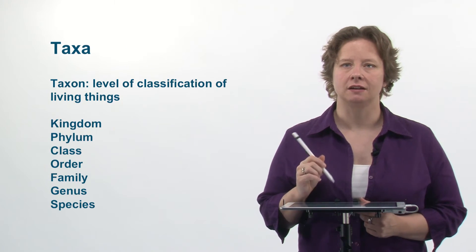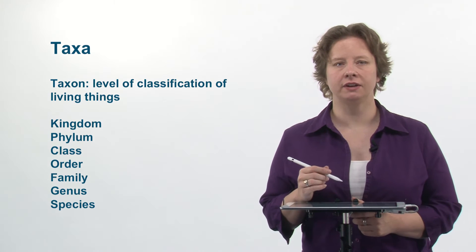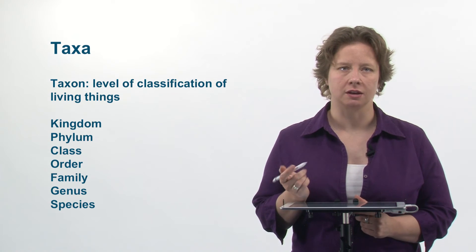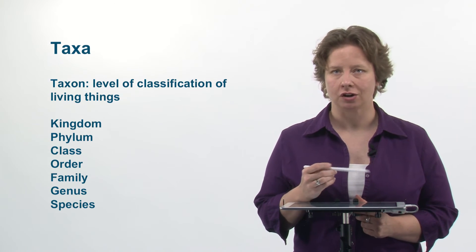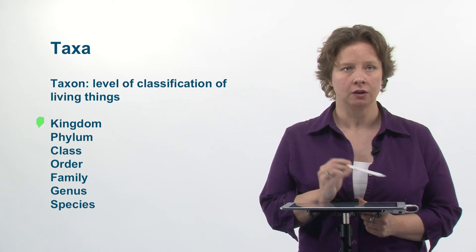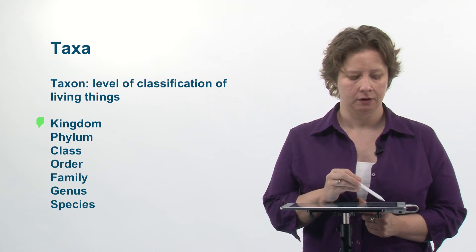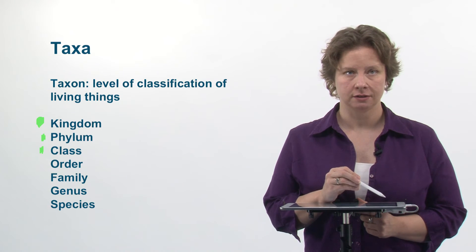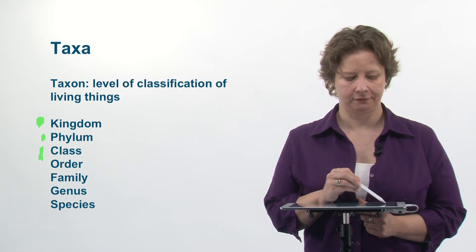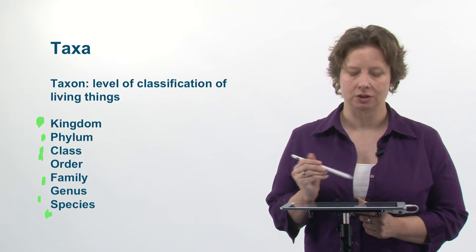Let's look at taxa. A taxon is a classification, or a level of classification for living things, and there are several of them. Starting with most inclusive, we have kingdom, phylum, class, order, family, genus, and species.